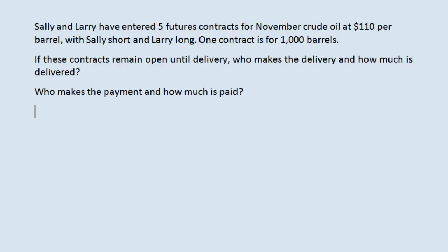Hello everyone, Jeff here with an example of a futures contract and what it means. In this example, we have two people, Sally and Larry, who have entered five futures contracts for November crude oil, meaning crude oil to be delivered in November, at $110 per barrel with Sally Short and Larry Long.